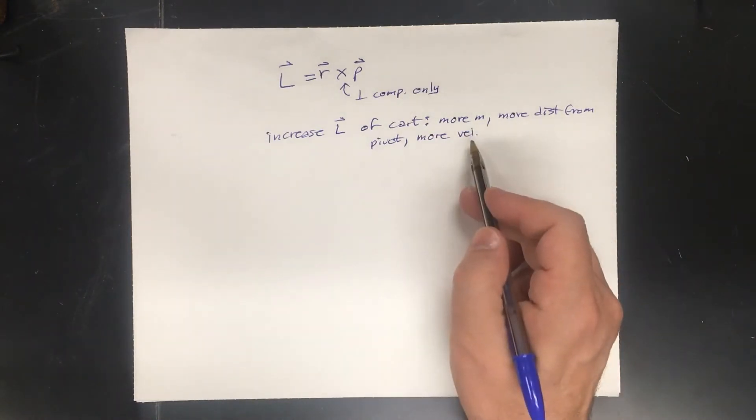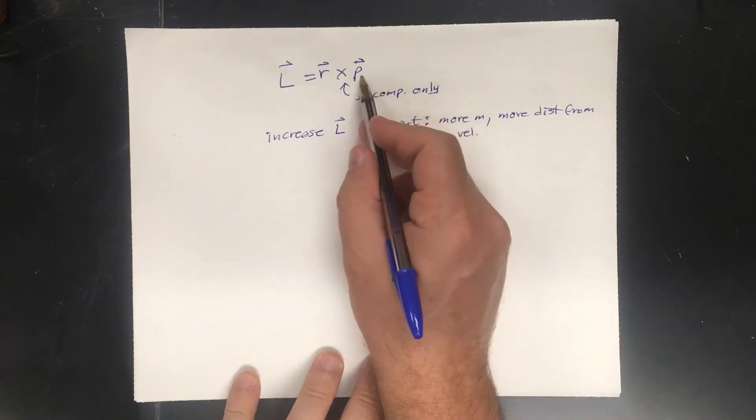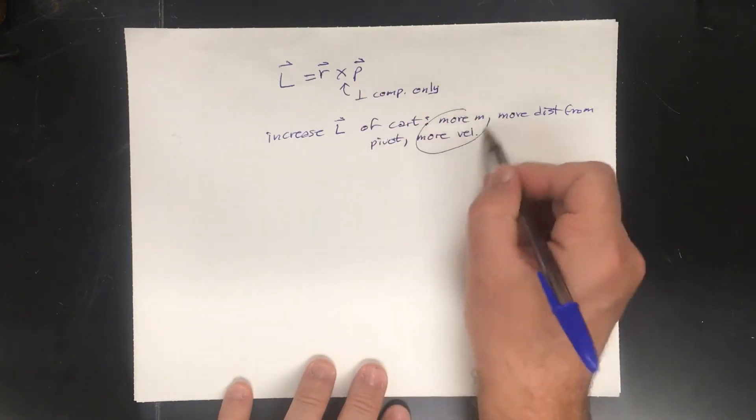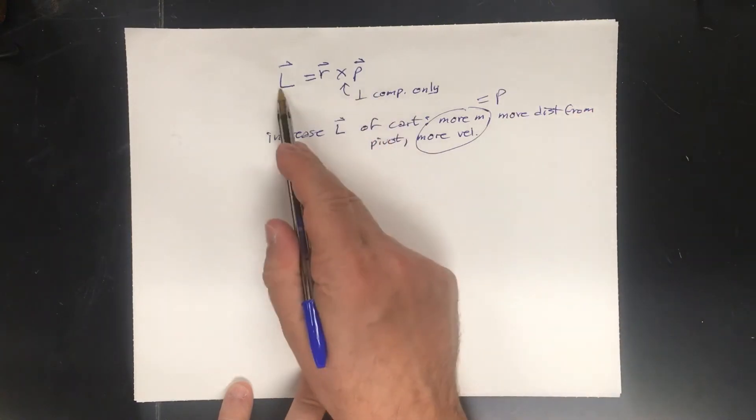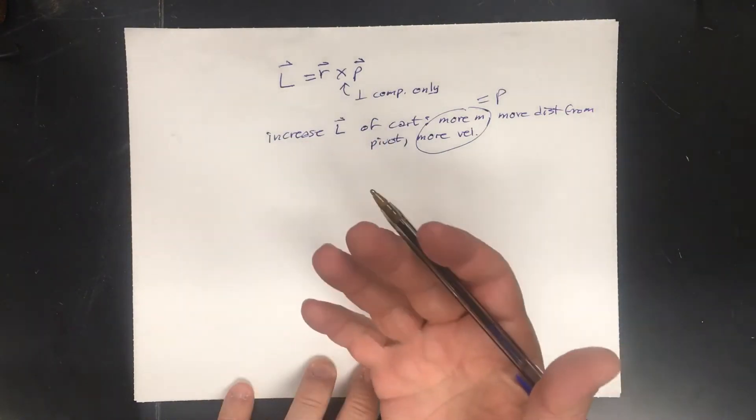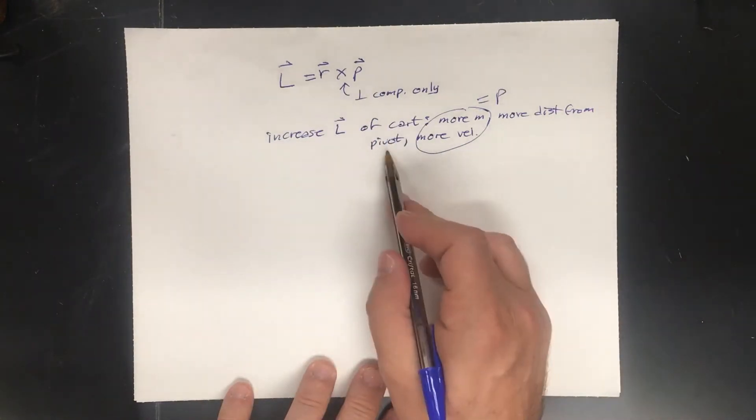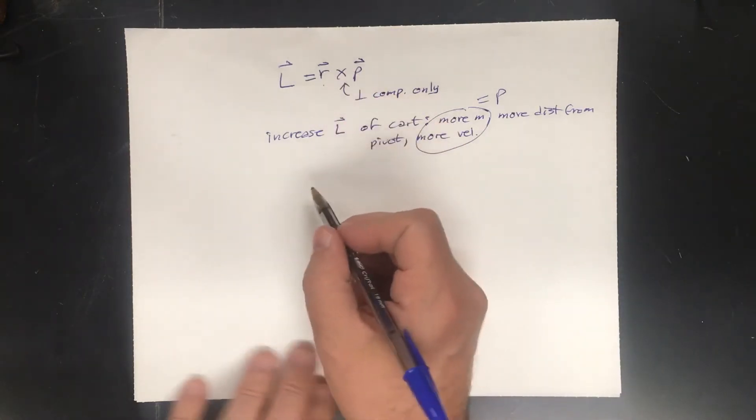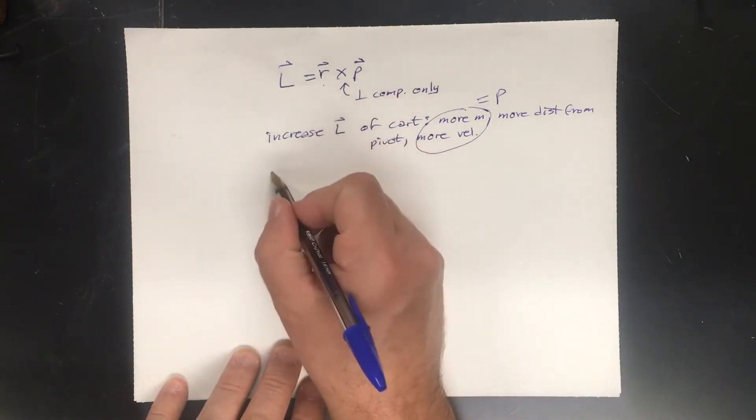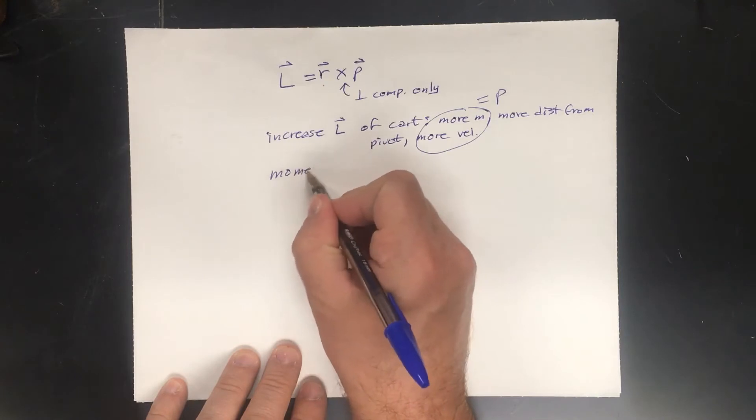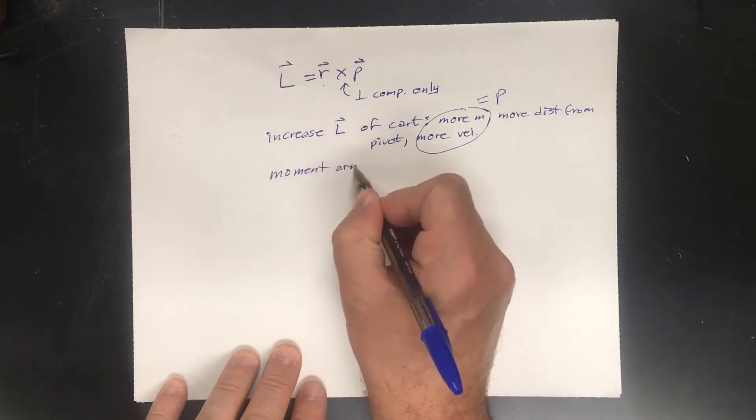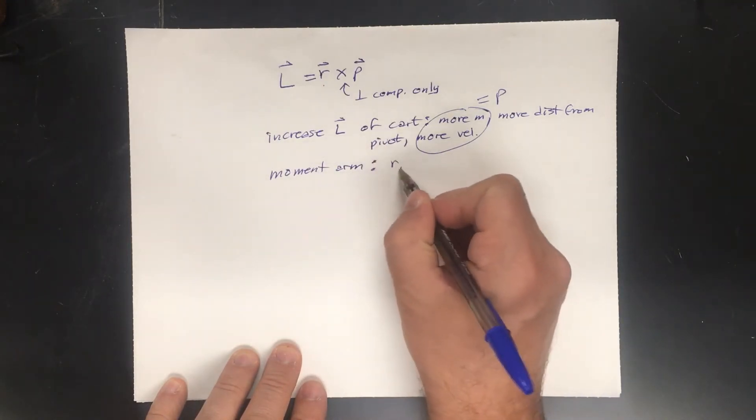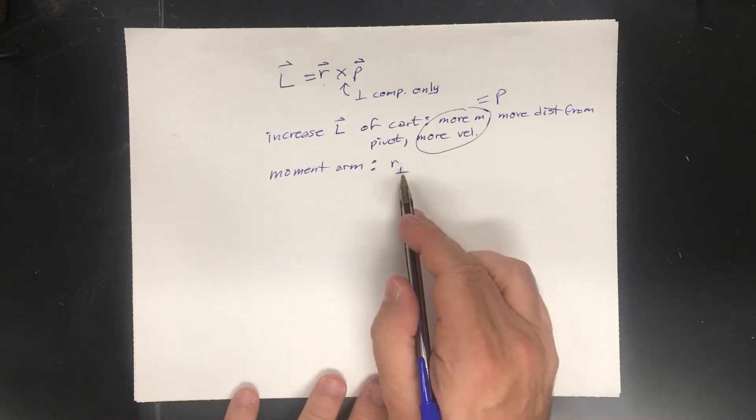Okay. Well, M and V is momentum. So these two things would equal momentum. So more momentum equals more angular velocity that you can give. Well, this distance from the pivot, that's what this is. Let's remind ourselves that this is known as the moment arm. And I like to call it as R perpendicular. Perpendicular to what?